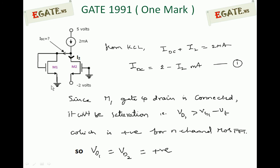When M1 is in saturation, the drain-to-source voltage is always positive. Since we are applying 5 volts and the source is connected to ground, this voltage is definitely greater than 0 volts. Therefore, the drain of M1 is at a positive voltage. The drain of M1 is also the drain of M2, so VD2 is also positive — both VD1 and VD2 are positive voltages.